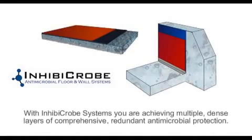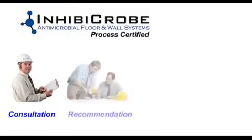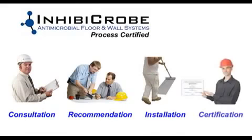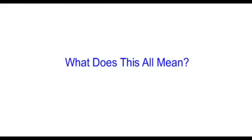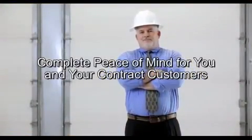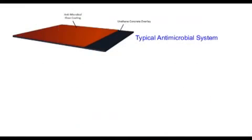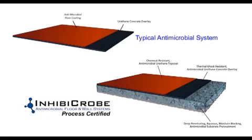With Inhibicrobe systems, you are achieving multiple, dense layers of comprehensive, redundant, antimicrobial building envelope protection combined with superior consultation, sales, installation, and certification support. And this all means complete peace of mind for you and your contract customers. You can choose a typical, run-of-the-mill antimicrobial floor and wall system, or you can achieve the ultimate in antimicrobial building envelope protection with Inhibicrobe.